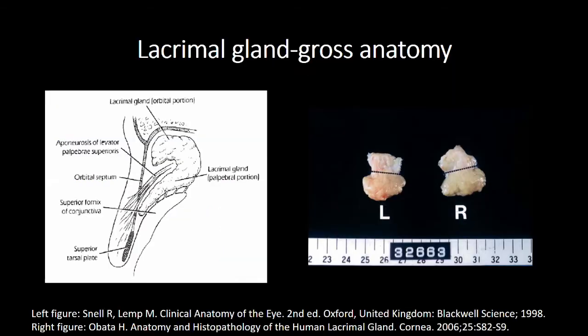The curling of the gland around the aponeurosis is well shown in the image on the left. In the right image of actual dissected specimens, the palpable part is above the dotted line. Although not obvious here, the thinner 3mm palpable part is about half the size of the thicker 5mm orbital part.